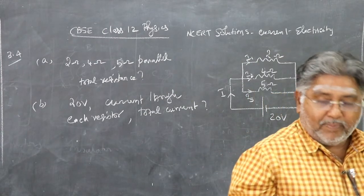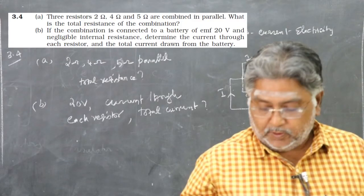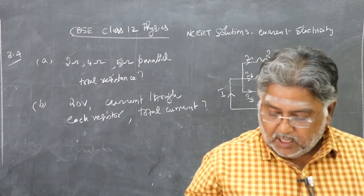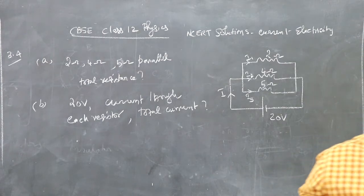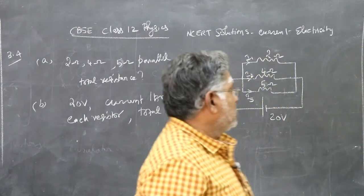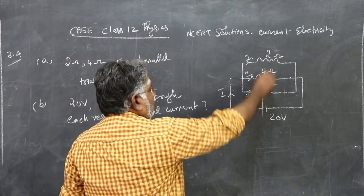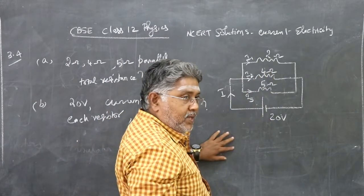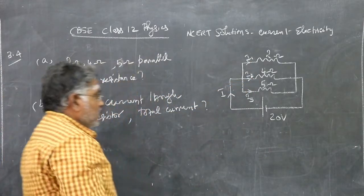Subdivision B: if the combination is connected to a battery of EMF 20 volt and negligible internal resistance, determine the current through each resistor and the total current drawn from the battery. This is the circuit diagram — three resistors 2 ohm, 4 ohm, 5 ohm in parallel, connected to a battery of 20 volt.